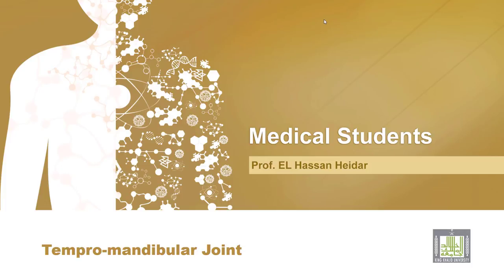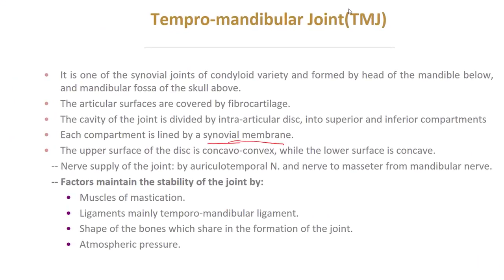Temporomandibular joint. It is a synovial joint of condyloid variety, formed by the head of the mandible from below and the mandibular fossa of the skull from above. The articular surfaces are covered by fibrocartilage. The cavity of the joint is divided by an intra-articular disc into superior and inferior compartments. Each compartment is lined by synovial membrane.